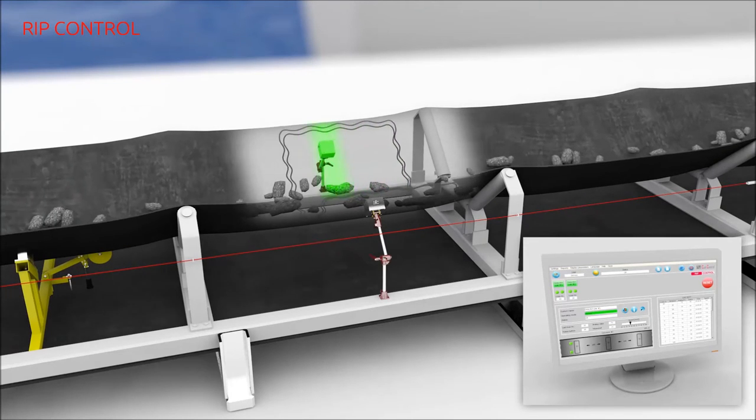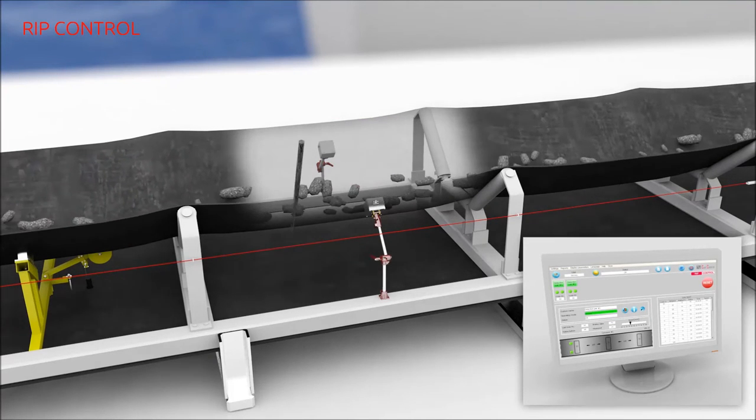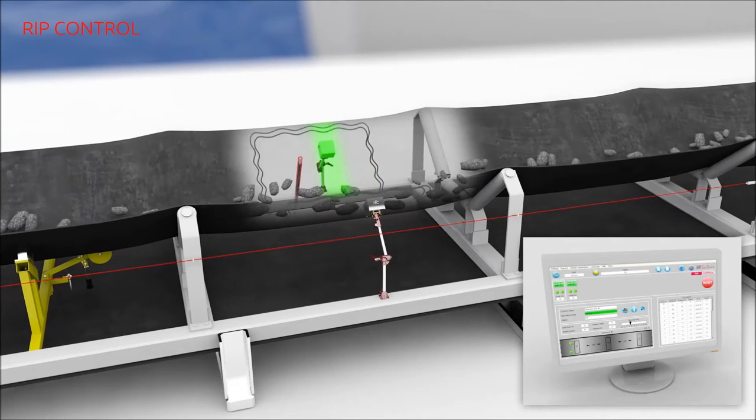A central data analysis system informs you about the condition of the sensor loops and the conveyor belt at any time.